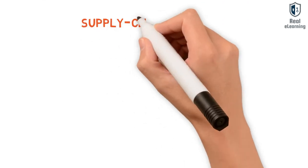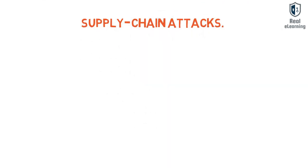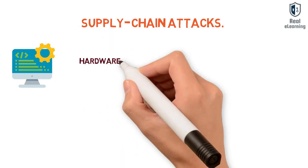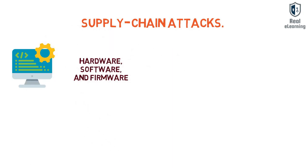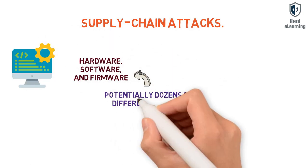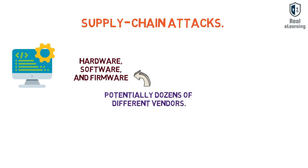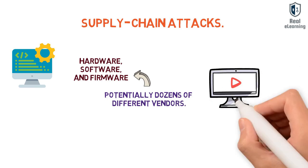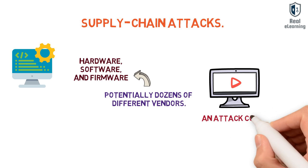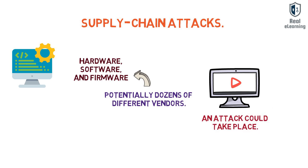Supply chain attacks. The average computing system combines hardware, software, and firmware from potentially dozens of different vendors. If any of the devices from the chain of supply is compromised, an attack could take place.